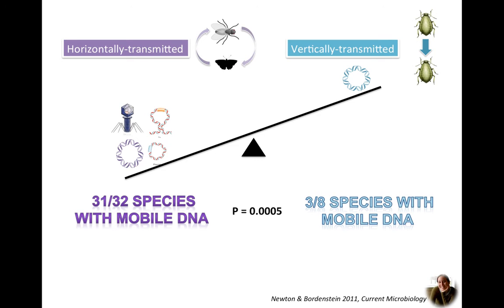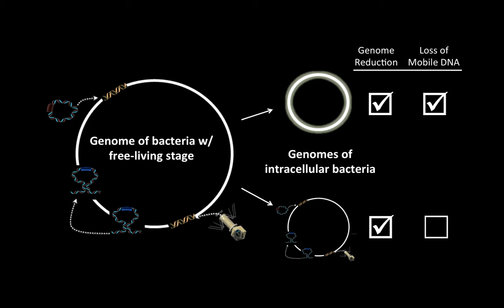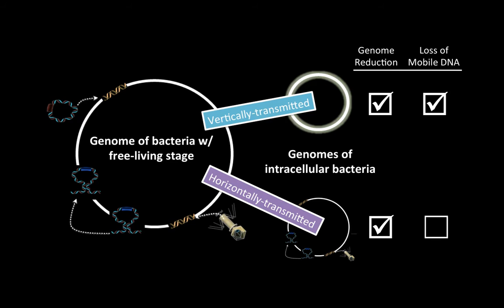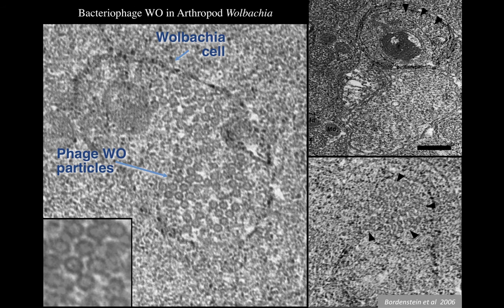When a free-living bacterium becomes symbiotic, it tends to lose mobile DNA and other genes, becoming smaller without any mobile DNA. But there also appears to be a trajectory where you become smaller but still maintain mobile DNA. This wasn't well-considered in how we think about endosymbiotic genome evolution. We can now overlay transmission lifestyle onto this model. Let's get into an experimental system to understand how mobile elements survive and flourish inside an intracellular bacteria.